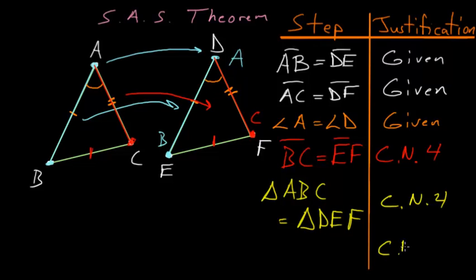And one final conclusion we can draw using common notion number four is that these angles are equal to each other. So angle B has to equal angle E. But we also know that this angle F here has to equal this angle C. So angle F has to equal angle C.